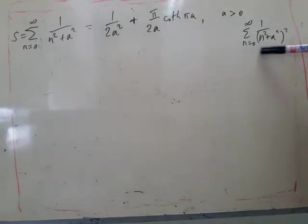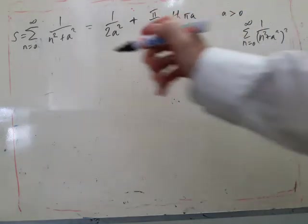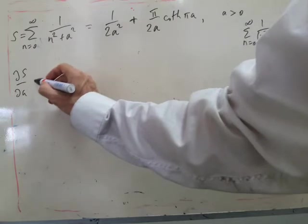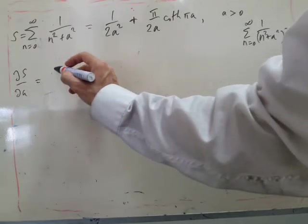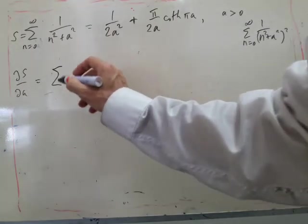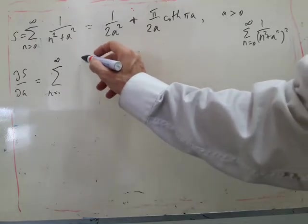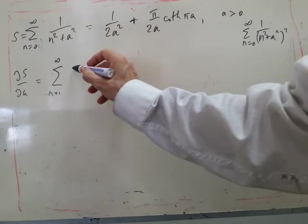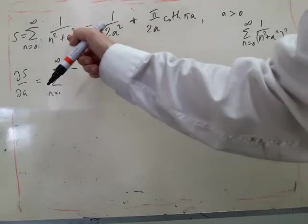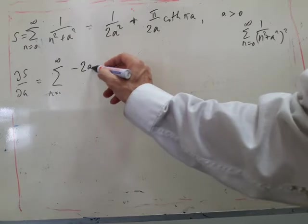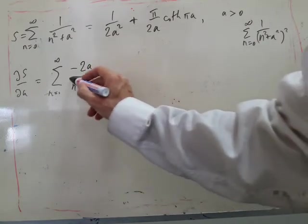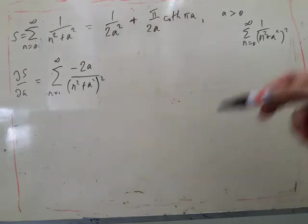The second bit, we want to find this sum, so we can differentiate S both sides with respect to A. So dS by dA is differentiating inside the sum. We end up with a minus because we've got 1 over to the power minus 1, and then differentiating it, the A squared gives us 2A on top.